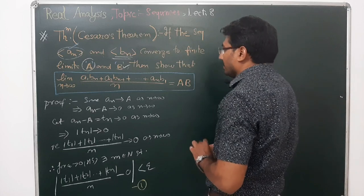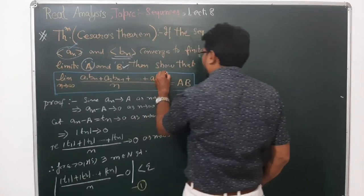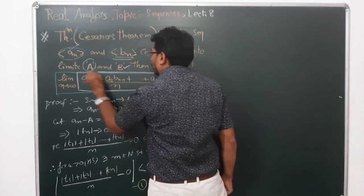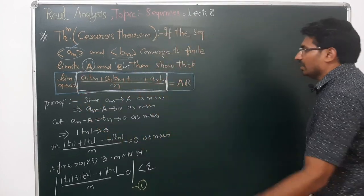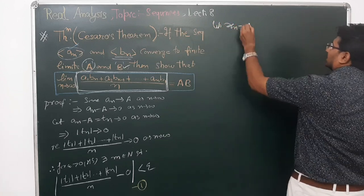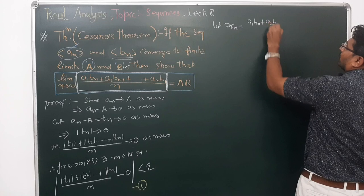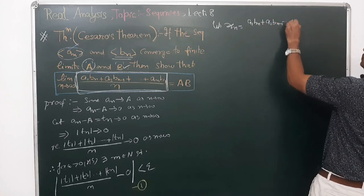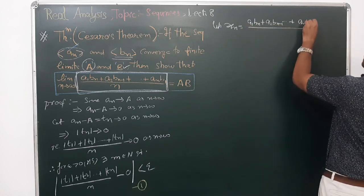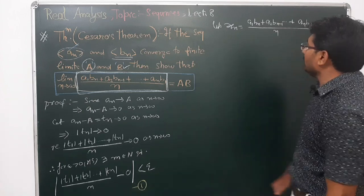Now we have to prove that the sequence x_n converges to a·b. Suppose x_n is defined as (a_1·b_n + a_2·b_{n-1} + ... + a_n·b_1) divided by n. Let us show that x_n converges to a·b.